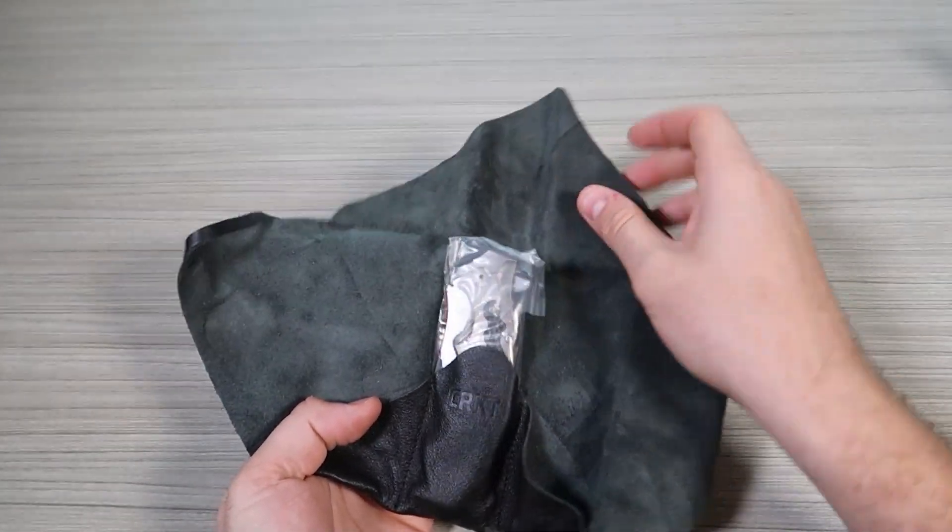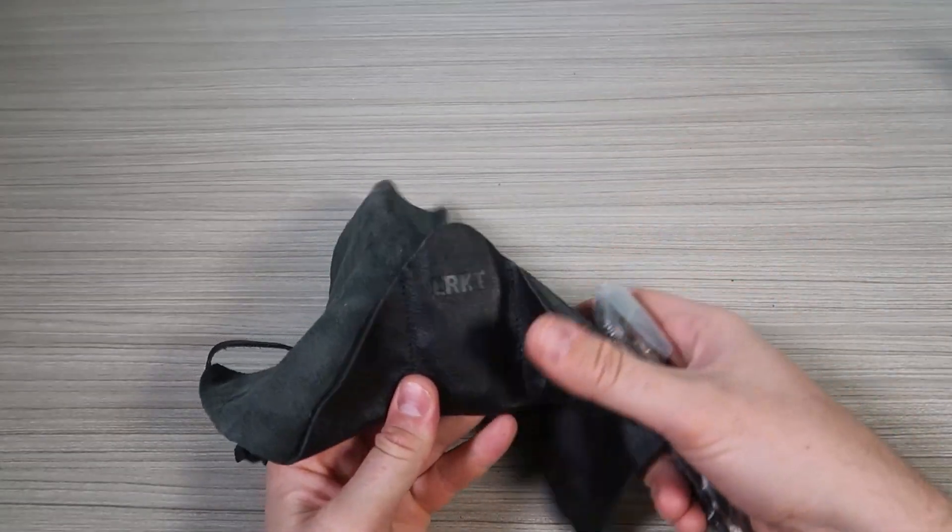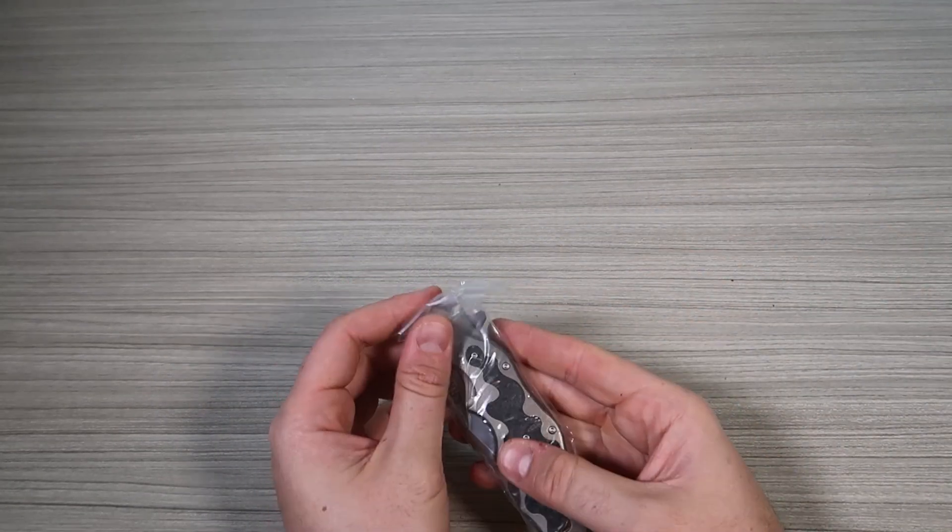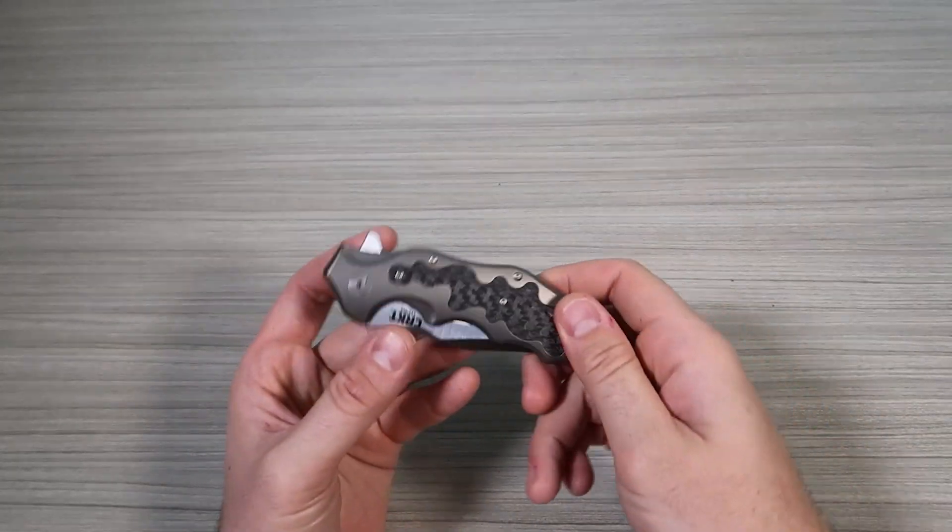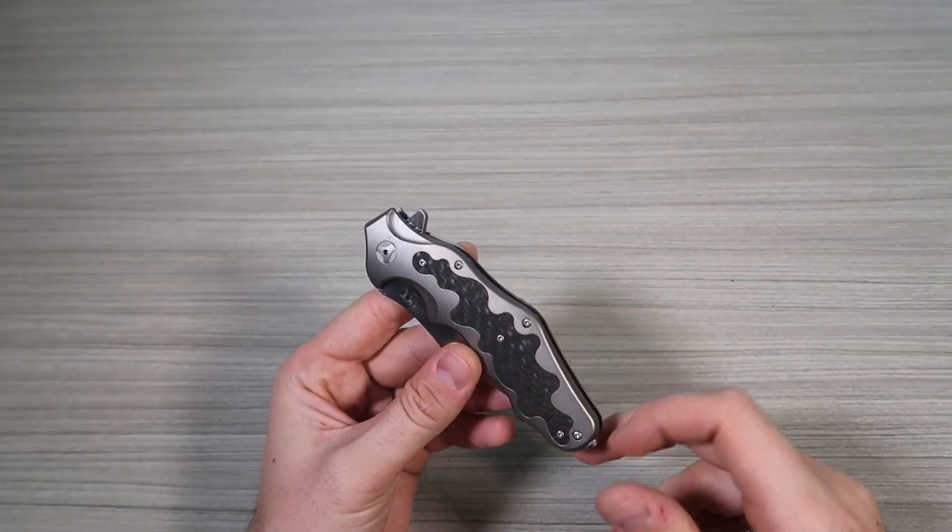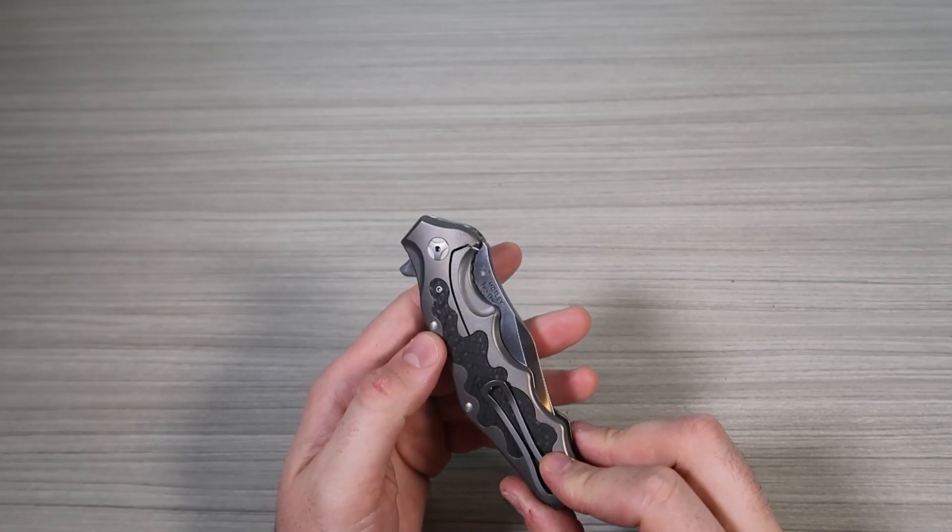That's a cool pouch. Check this out. I think I've seen that before once or twice. That's a flipper, as you can see. Carbon fiber inlay right here. Beautiful. Both sides.